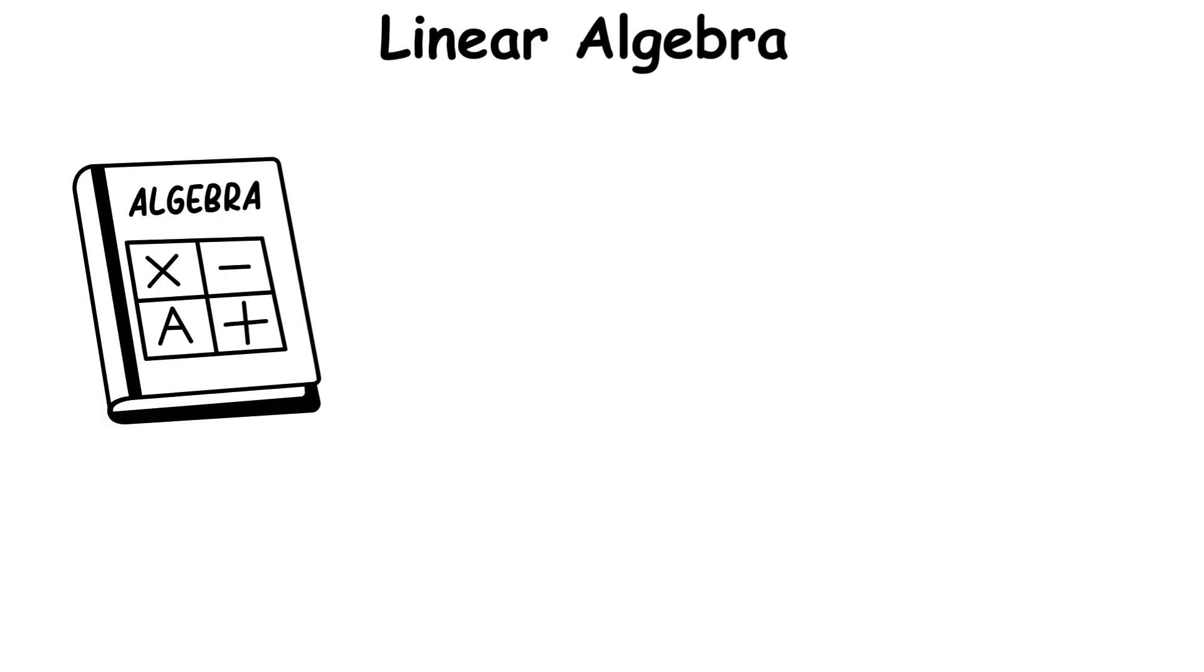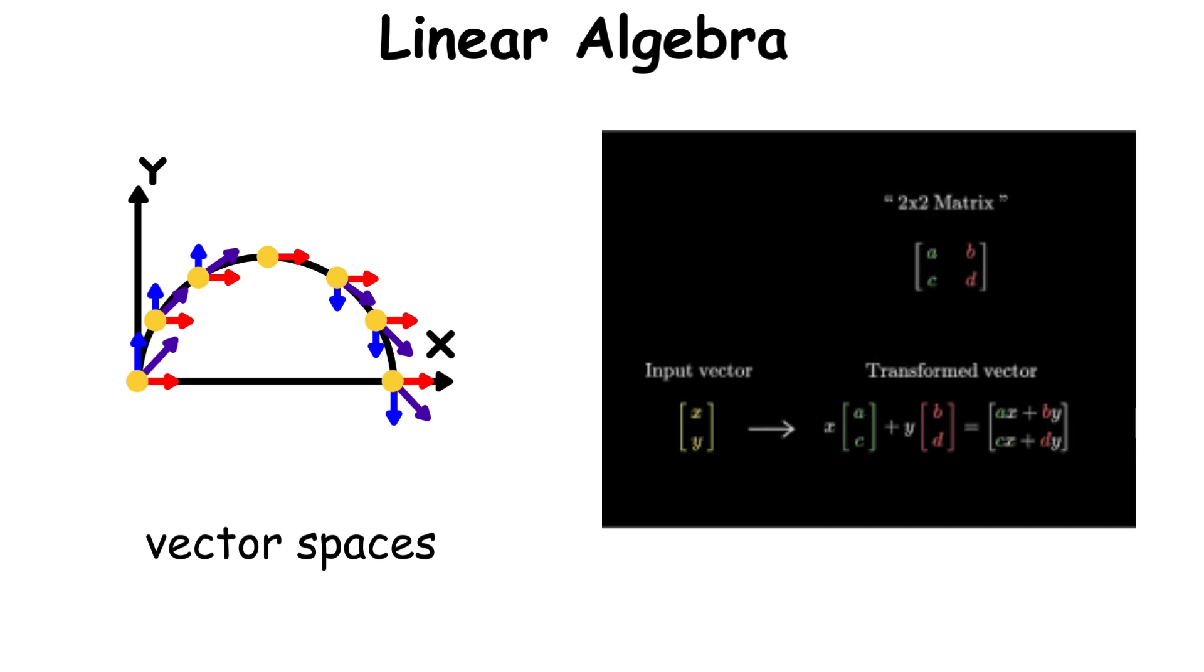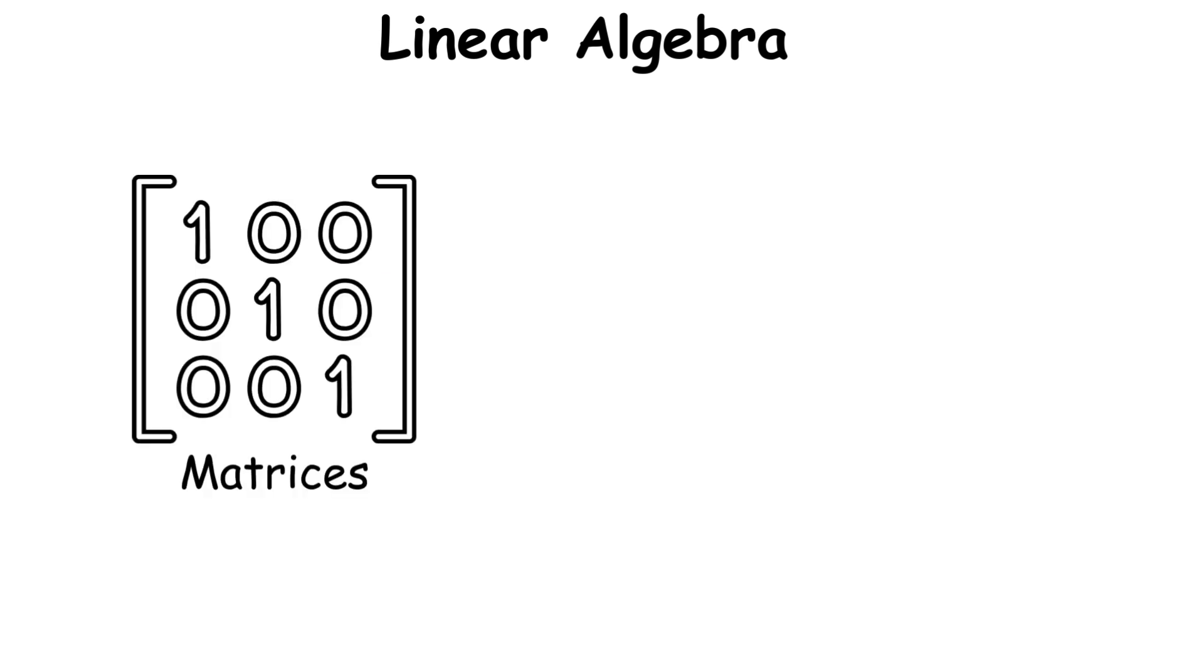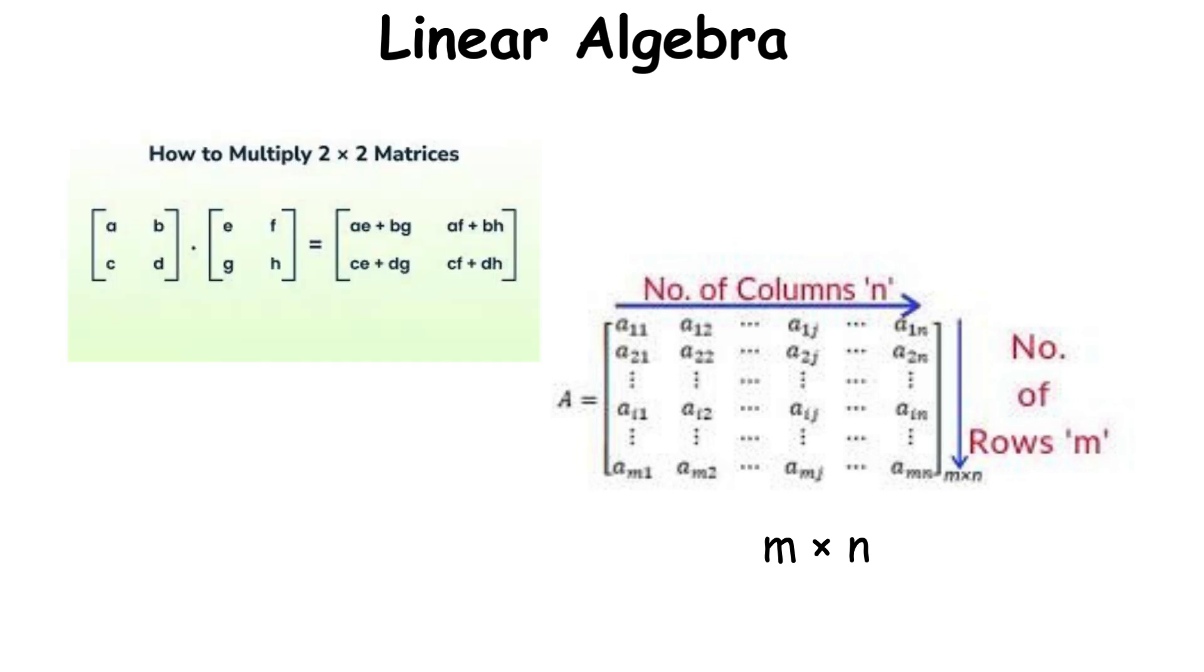Then we get into linear algebra, the study of vector spaces and linear transformations. Matrices are rectangular arrays of numbers that represent linear transformations. An m by n matrix has m rows and n columns, and matrix multiplication follows the rule.